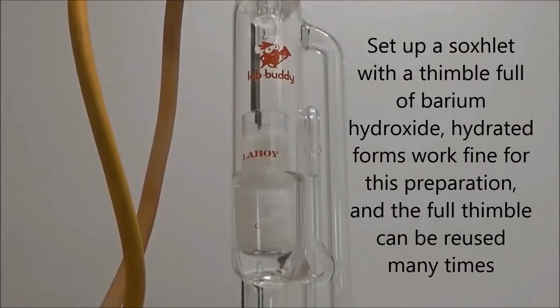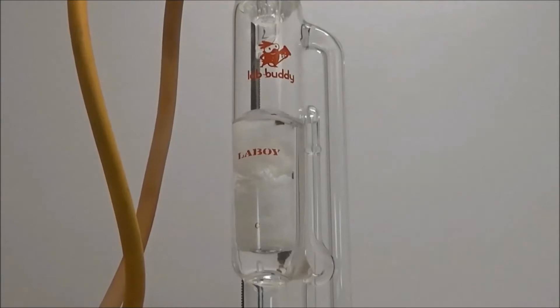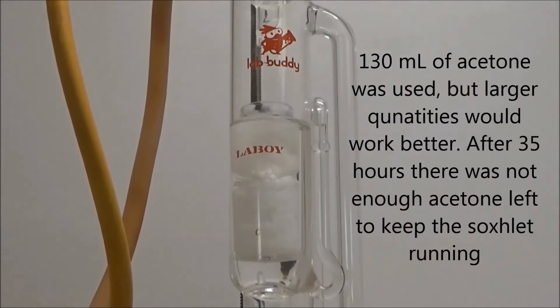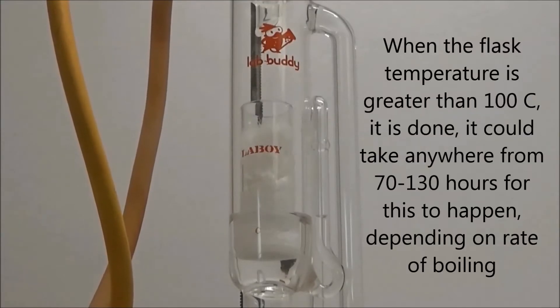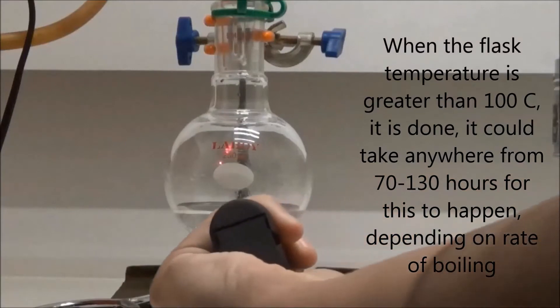A thimble packed with barium hydroxide octahydrate was placed in a Soxhlet extractor, through which was run 130 milliliters of acetone. This should be left to run until the contents of the flask boil at greater than 100 Celsius. 80 to 100 hours is normal time for this.